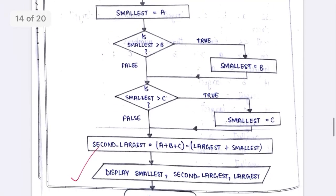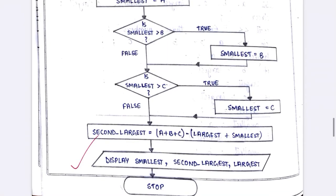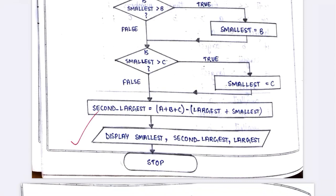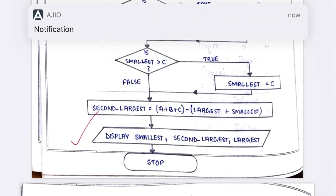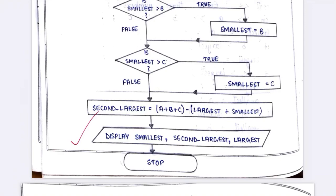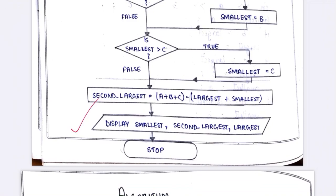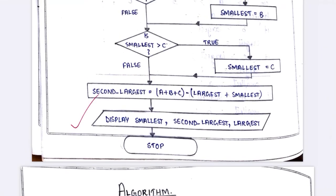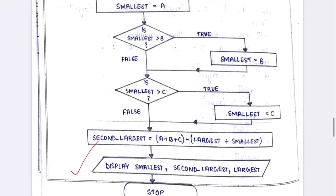For finding the smallest, we repeat the same logic but compare as smallest. Once we get the smallest, we find the second largest using the formula: add a plus b plus c, then subtract the largest and smallest from the total — the result is the second largest number. At this point you have all three values: smallest, second largest, and largest. The last step is stop. This completes the algorithm and flowchart.